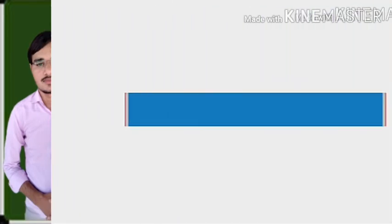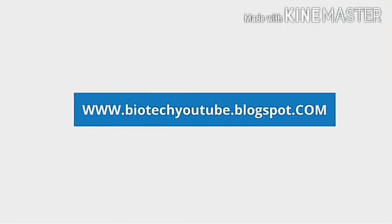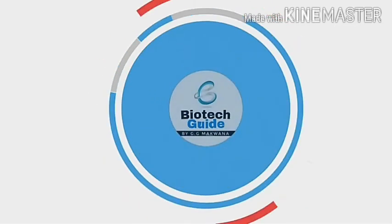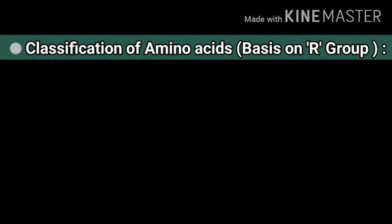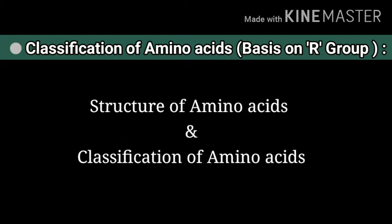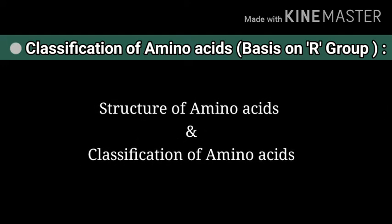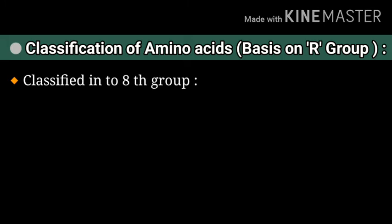First, I am talking about classification of amino acids based on R group. Before we start, if you want to see the structure of amino acids and other classifications, the link is given in the description box. So let's start — classification of amino acids based on R group is classified into eight groups.